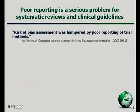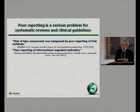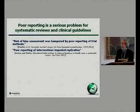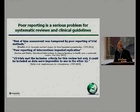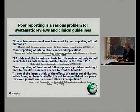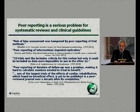Quotes from systematic reviews illustrate the problems: 'Risk of bias assessment was hampered by poor reporting of trial methods.' 'Poor reporting of interventions impeded replication.' '15 trials met the inclusion criteria but only four could be included as data were impossible to use in the other 11.' 'Poor reporting of duration of follow-up made it hard to calculate numbers needed to treat.' And one of the largest trials in an area, which found no beneficial effect, is yet to be published over a decade after its completion. These are all typical findings from Cochrane reviews.